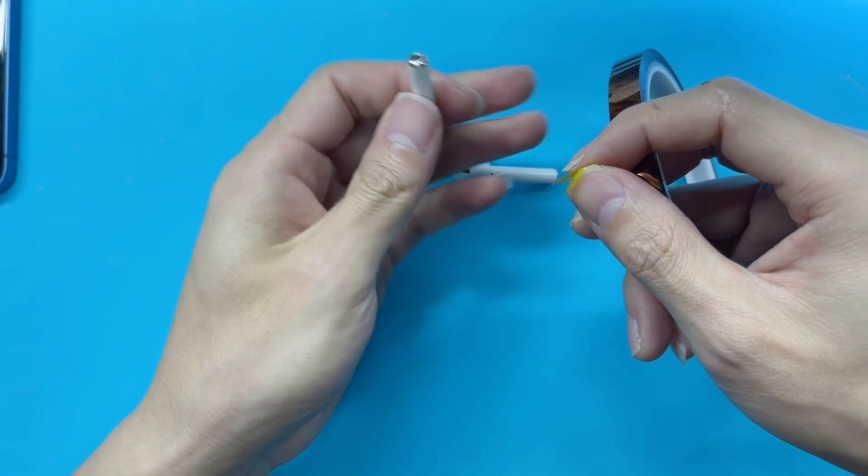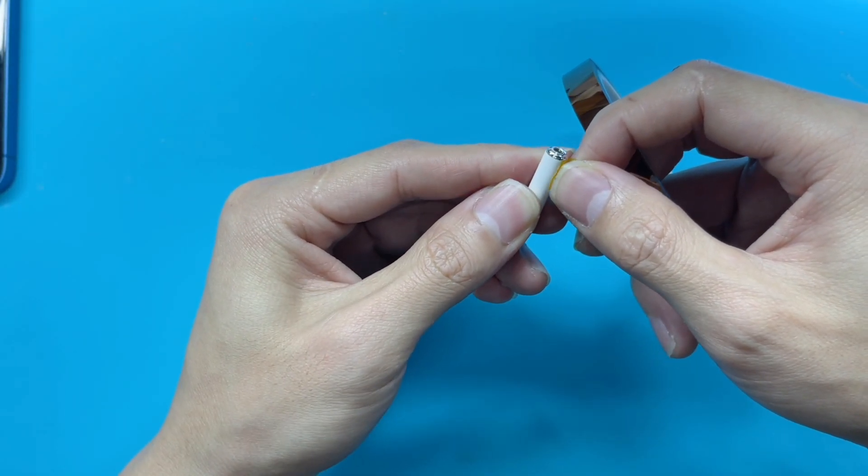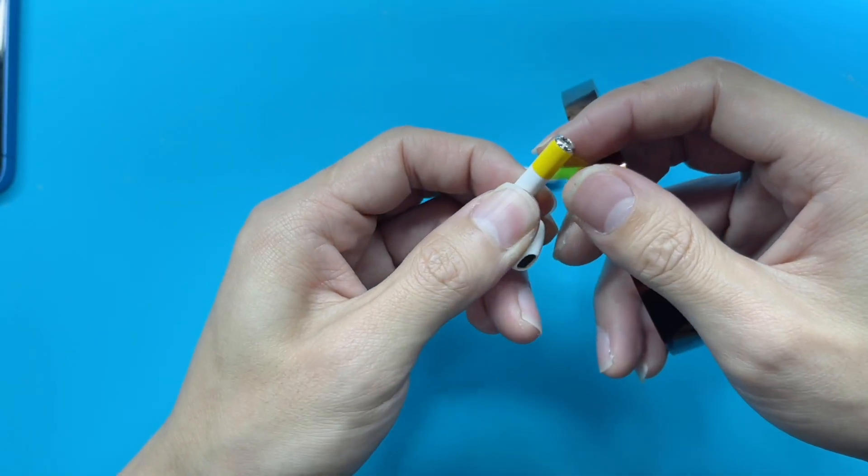And then, let's start to replace the battery. We need to paste the heat-resistant tape on the bottom to prepare for the heating.